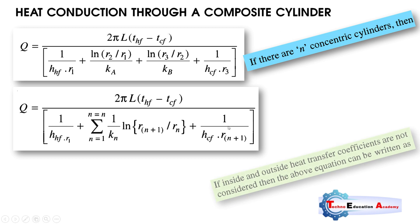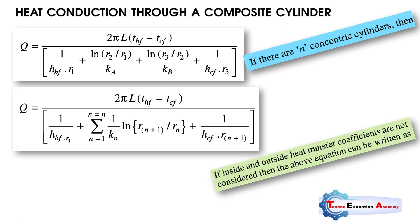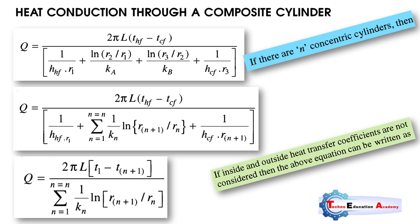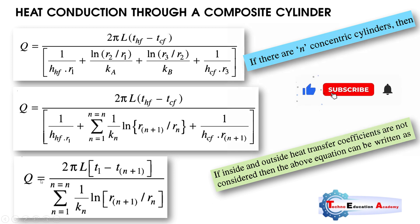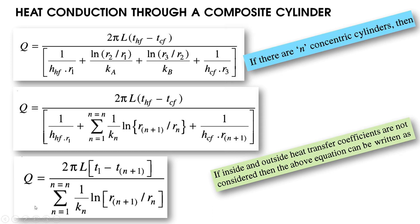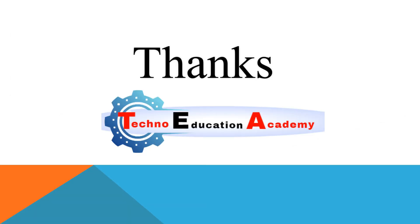If the inside and outside heat transfer coefficients are not considered — for example, if we neglect convection at the inner and outer surfaces of the composite cylinder — then we omit the first and last resistance terms and write the simplified conduction-only equation. This is the heat conduction equation for a composite cylinder.